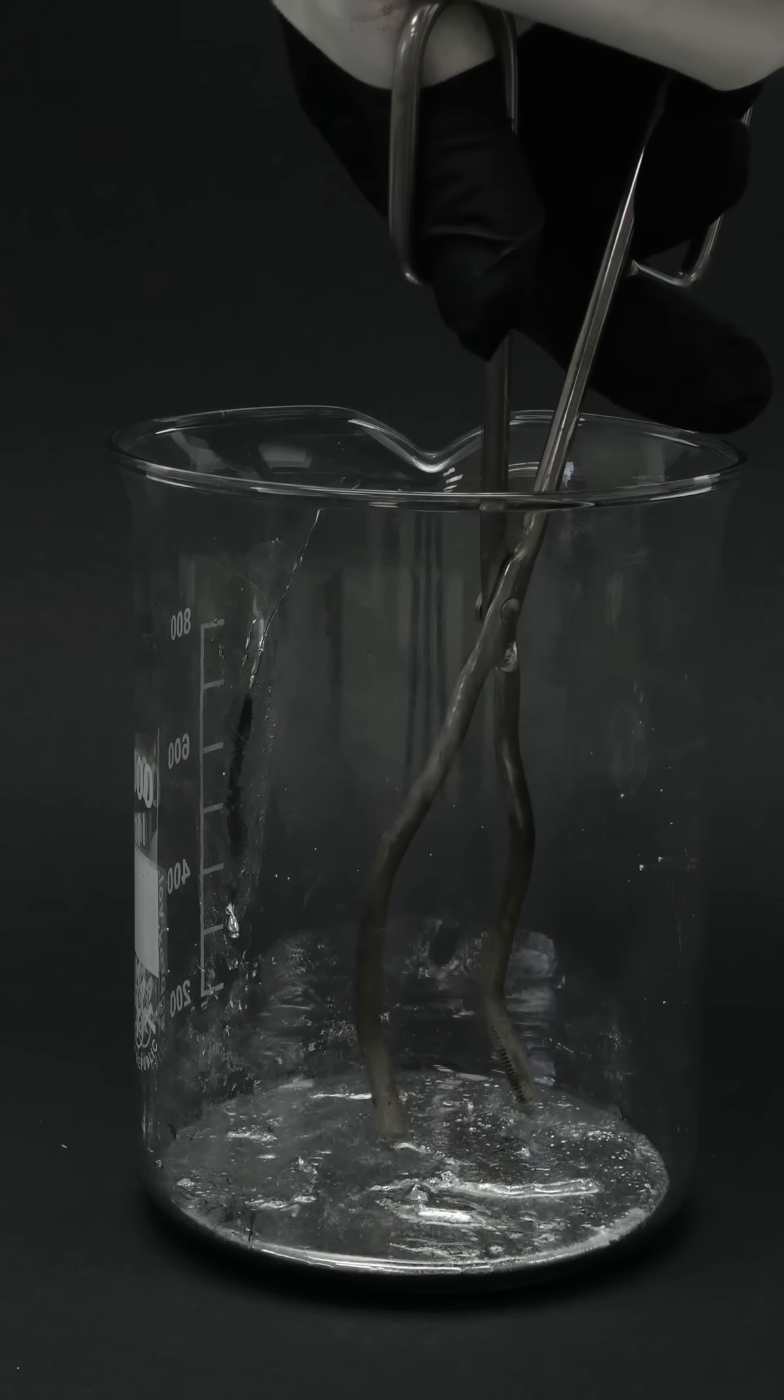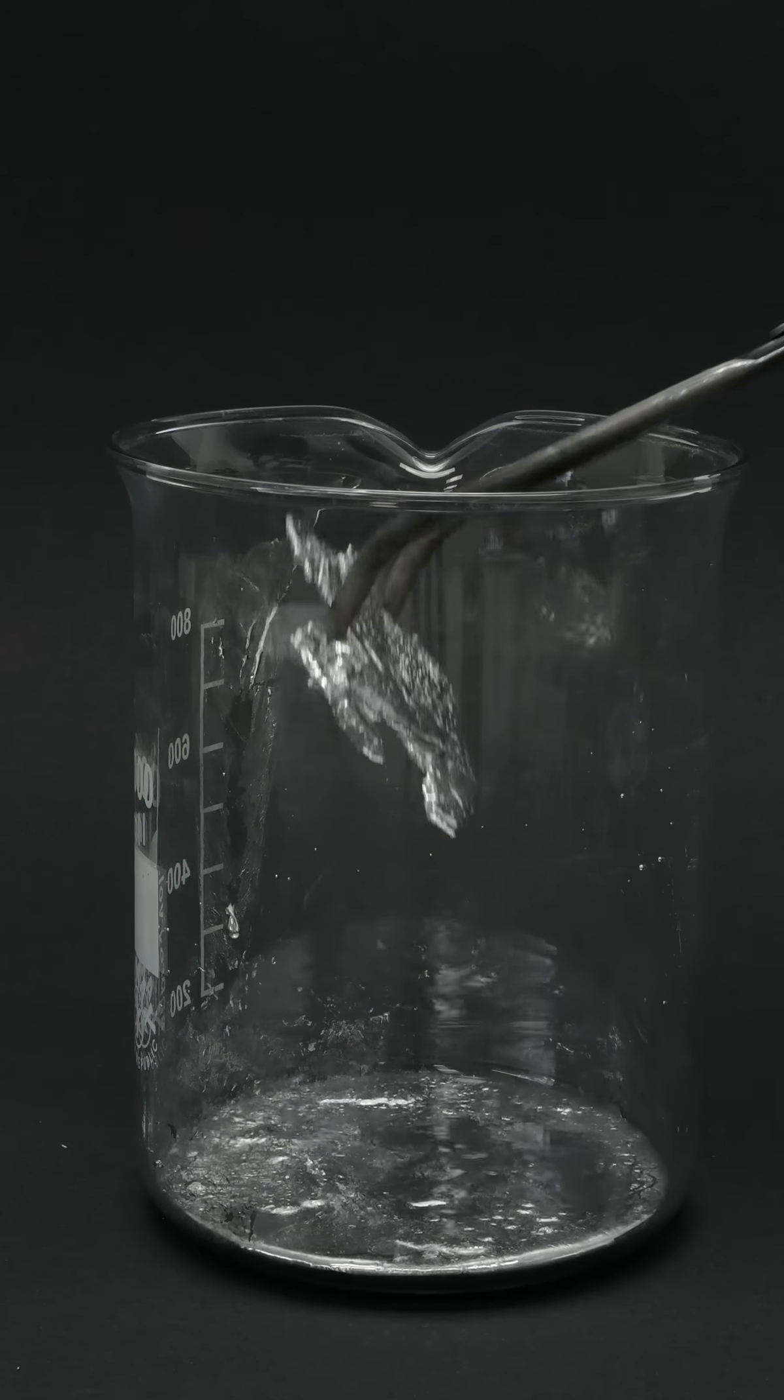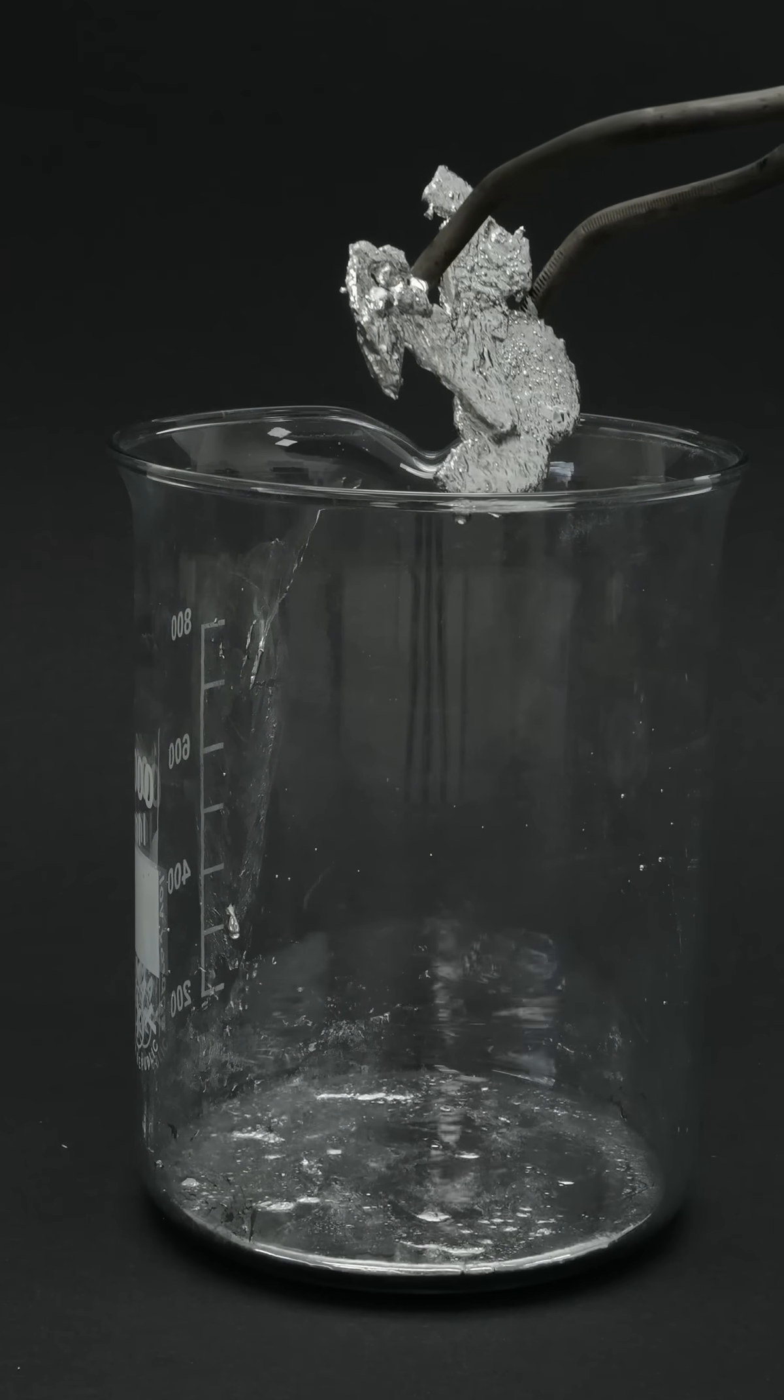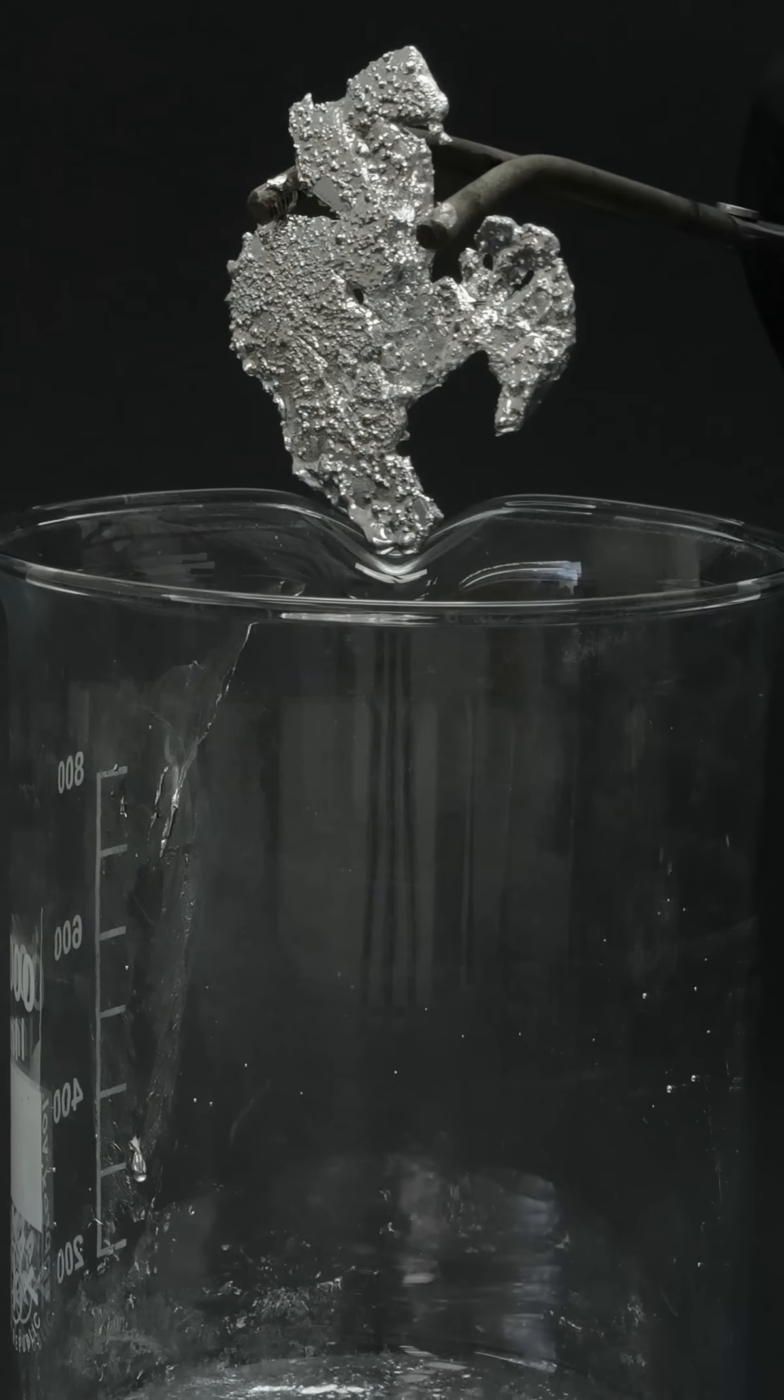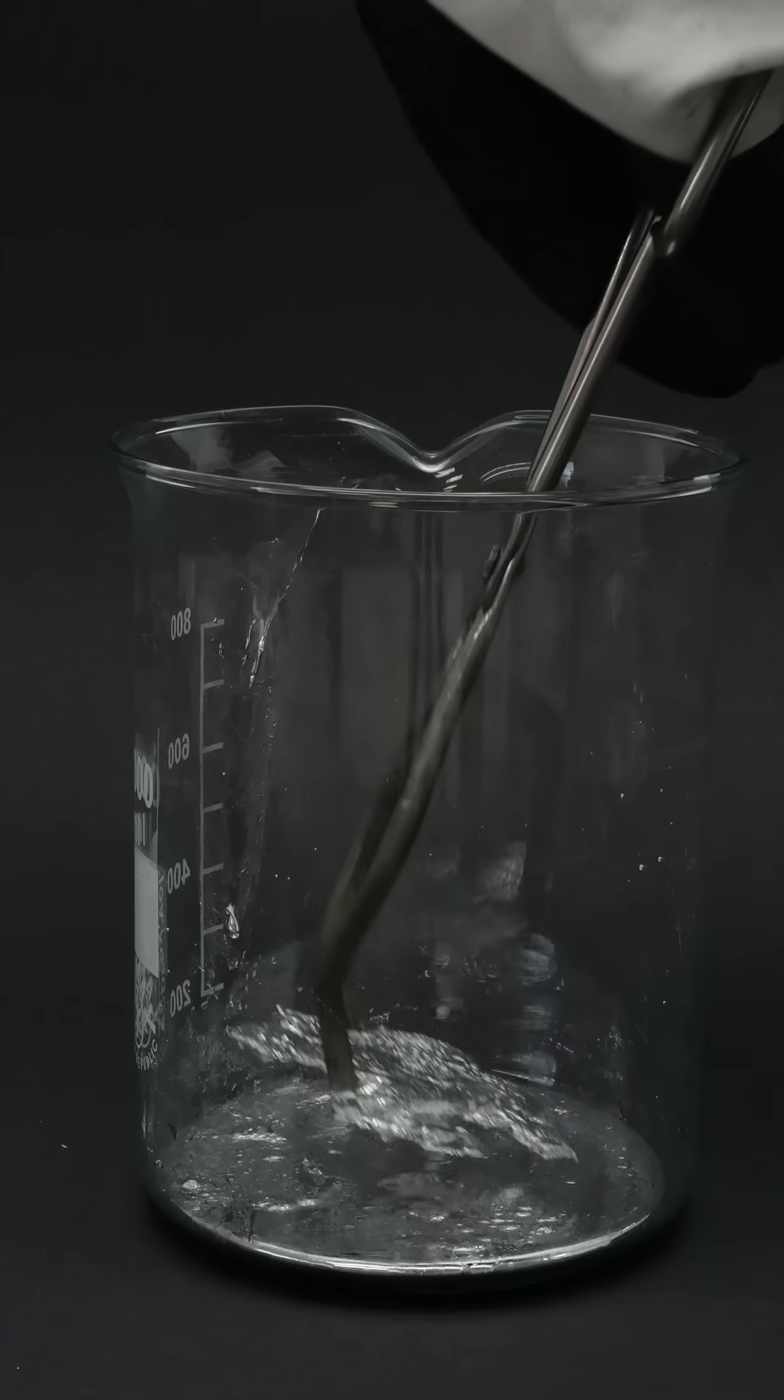When pouring it into a beaker, it's noticeable that part of the gallium has solidified again. That makes sense because the melting point of gallium is around 30 degrees Celsius and the lab is significantly colder.